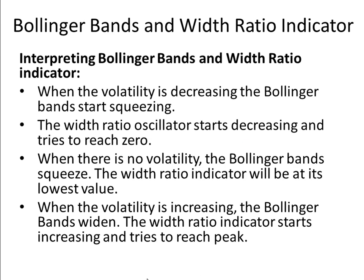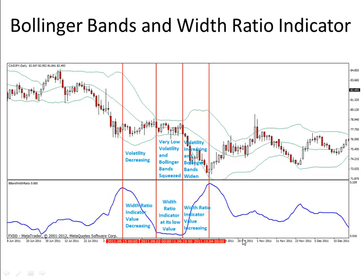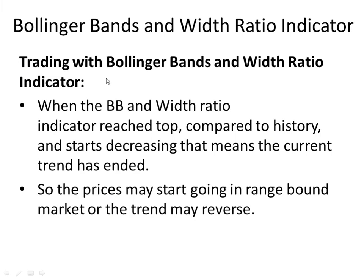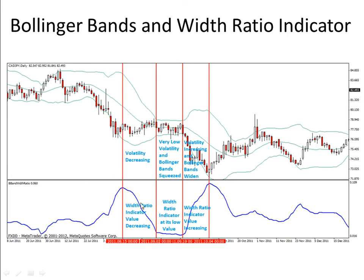When volatility is increasing, the Bollinger Bands widen and the width ratio indicator starts increasing, trying to reach a peak. You can see the Bollinger Bands start widening at this point, and the Bollinger Bands Width Ratio indicator starts increasing and reaches some peak value. This is how the Bollinger Bands Width Ratio indicator normally works.